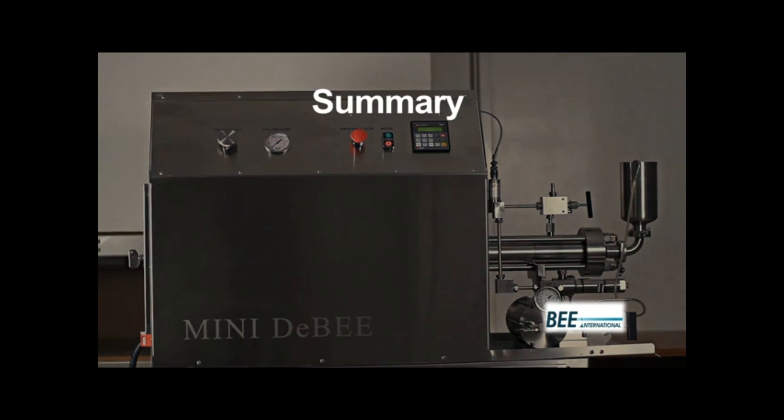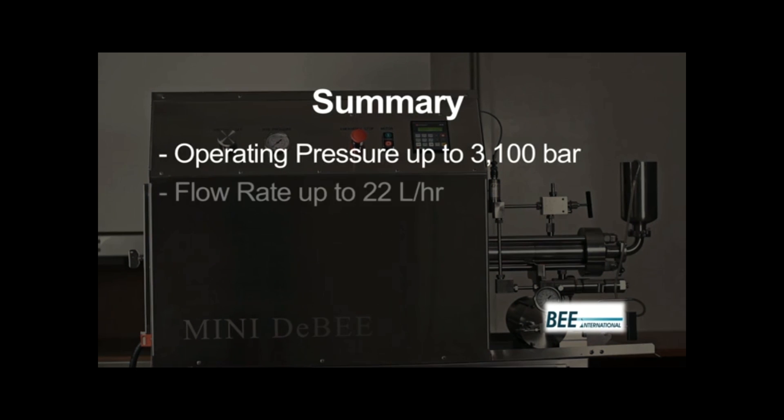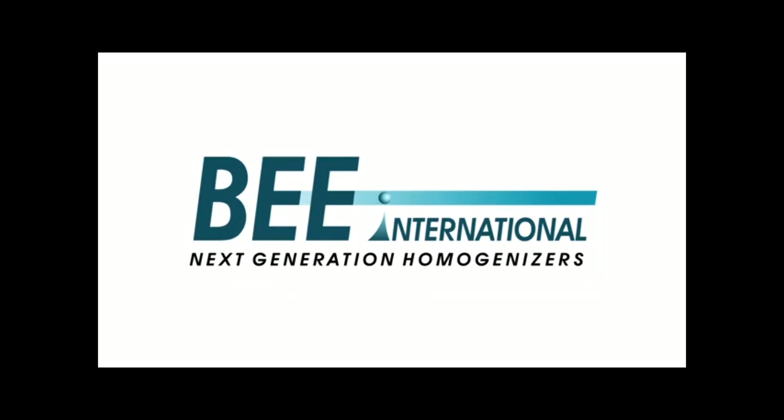In summary, the MiniDB has an operating pressure up to 3,100 bar, a flow rate up to 22 liters per hour, is easy to use and clean, has more options for greater experimentation, and is scalable to manufacturing.